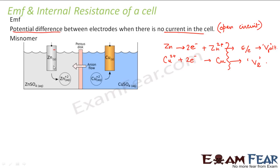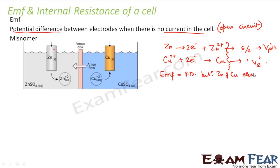Since zinc is losing two electrons and becoming Zn²⁺, electrons are moving from the electrode to the electrolyte, meaning the zinc electrode is at a higher potential than the electrolyte. Copper is gaining electrons, so copper is at a lower potential than the electrolyte — zinc and copper undergo two reverse processes. Therefore, EMF is nothing but the potential difference between the zinc and copper electrodes.